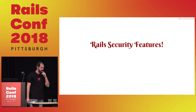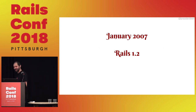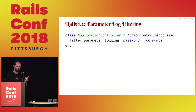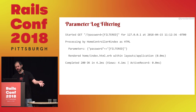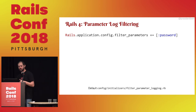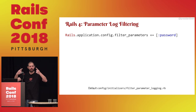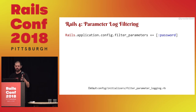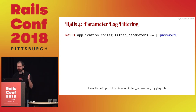Rails 1.2 in 2007 added parameter log filtering — when you log stuff, it can get filtered. In Rails 4, this got upgraded from controller level to application level. This is the default configuration initializer generated for you: filter out passwords, put your sensitive parameters in there, and Rails will filter the logs for you.